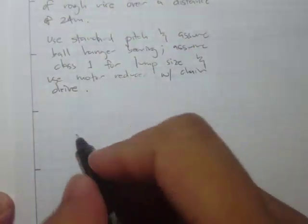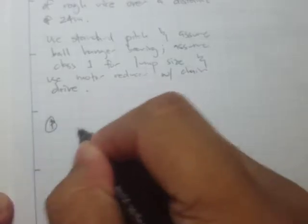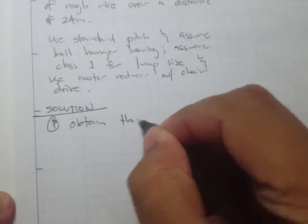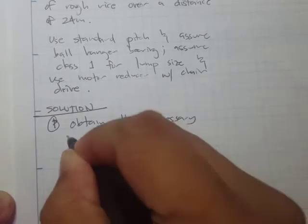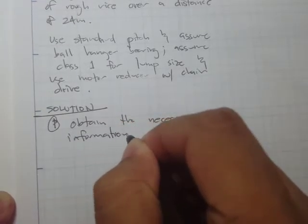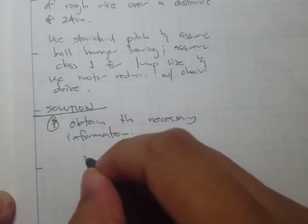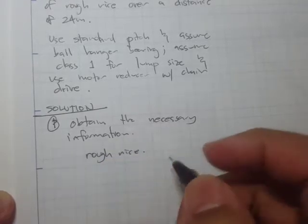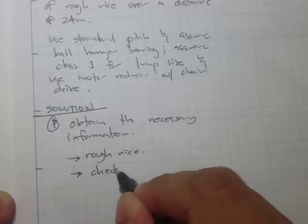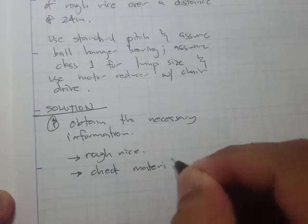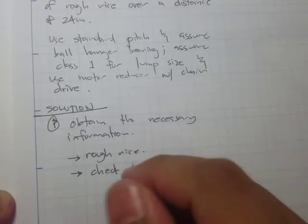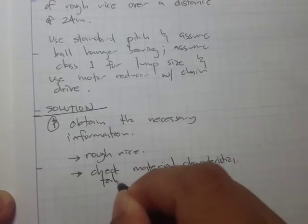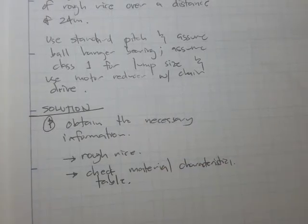The first step is to obtain the necessary data. We need to check the material characteristics table for our material, which is rough rice.